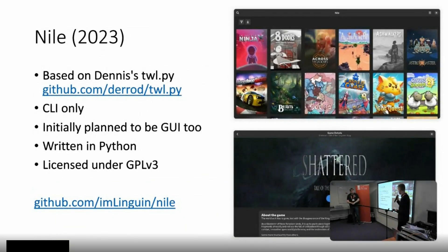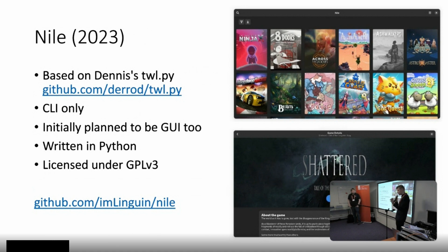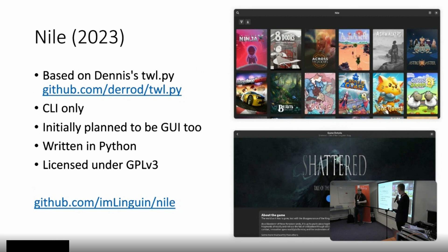The next one is Niall. It's based on Denis's twl.py. This is a CLI-only application at the moment, although there were initial plans for a GUI, as you can see on the screenshots. The initial mockups show how it would look - it's running in LibAdwaita, also written in Python, and licensed under GPL3.